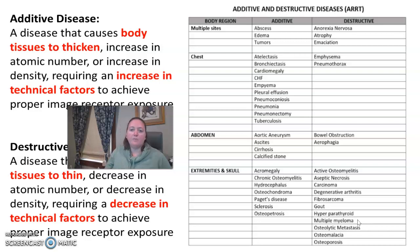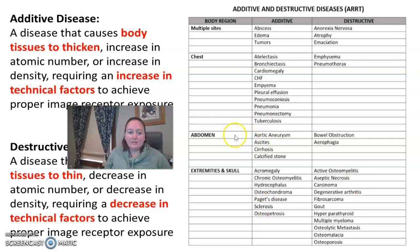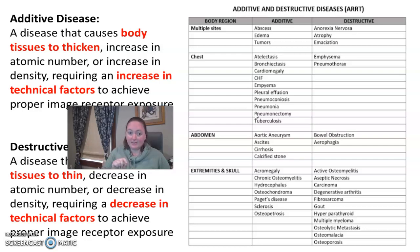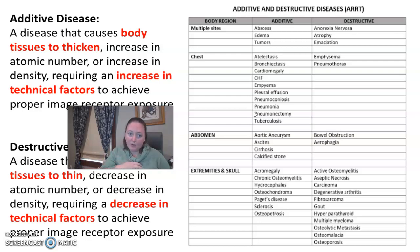Knowing these terms and your medical terminology helps you navigate them — if you know 'effusion' means fluid, or that 'pneumo' relates to air, that helps you remember. You probably don't manually adjust factors for pleural effusion versus pneumothorax in practice — you use AEC on the panel — but for ART, this is what you need to know: increase technique for additive, decrease technique for destructive. We'll go through a bunch of these with image examples in the next videos.